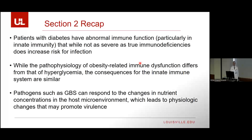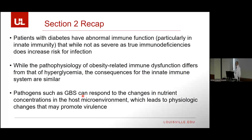Section two recap: patients with diabetes have abnormal immune function, particularly in innate immunity. While it's not as severe as true primary immunodeficiencies, it certainly increases your risk. The pathophysiology of obesity-related immune dysfunction differs from hyperglycemia-related immune dysfunction, but the consequences are similar. And we're starting to appreciate that pathogens are not passive players — they actually change in response to nutrient concentrations in the microenvironment. For GBS especially, this seems to be one mechanism by which this relatively rare adult pathogen is becoming more prominent.